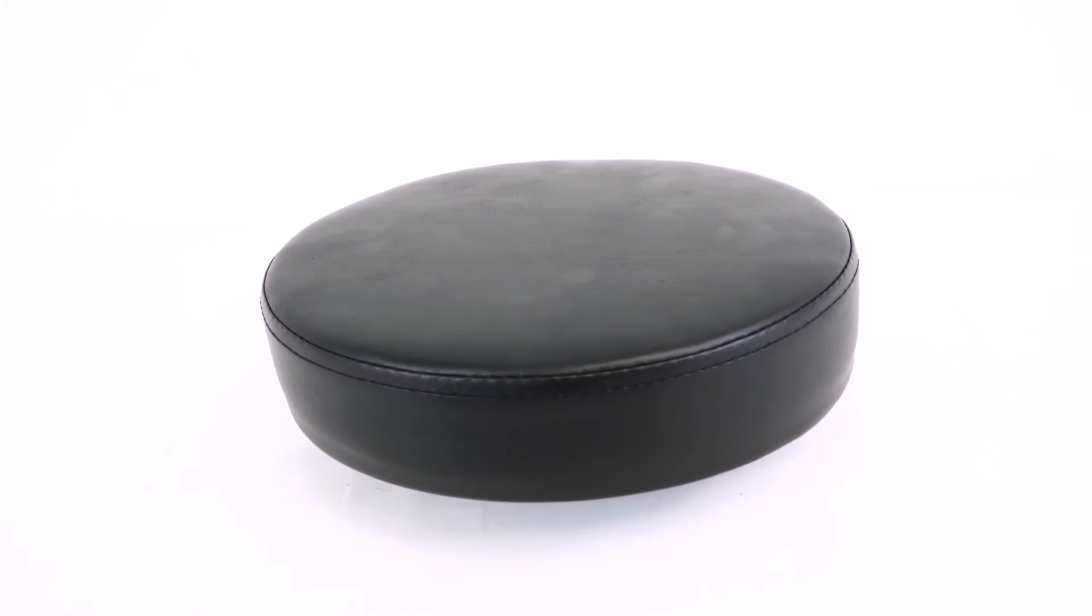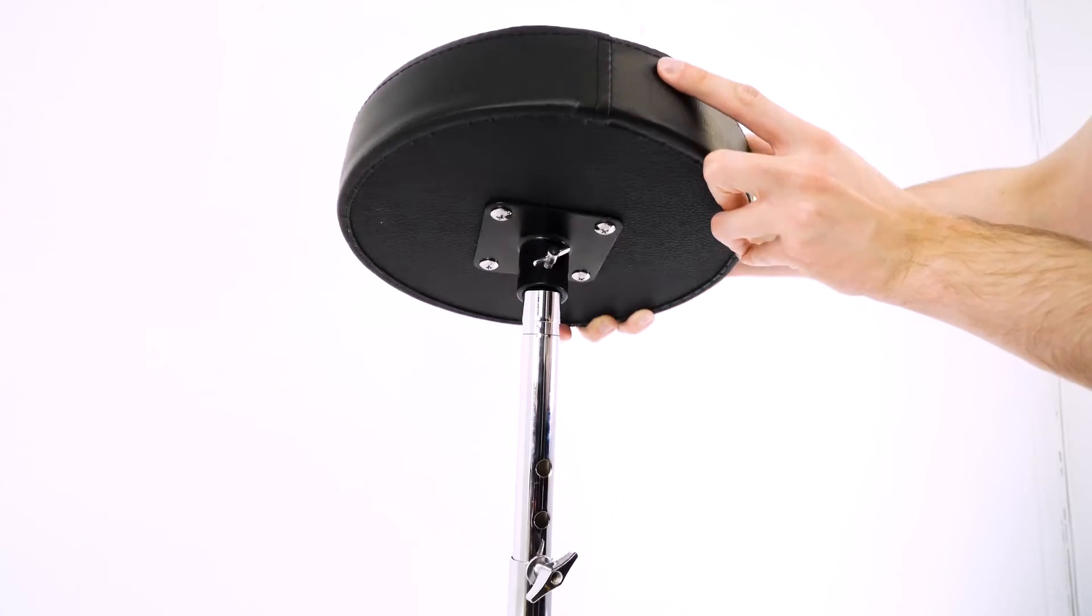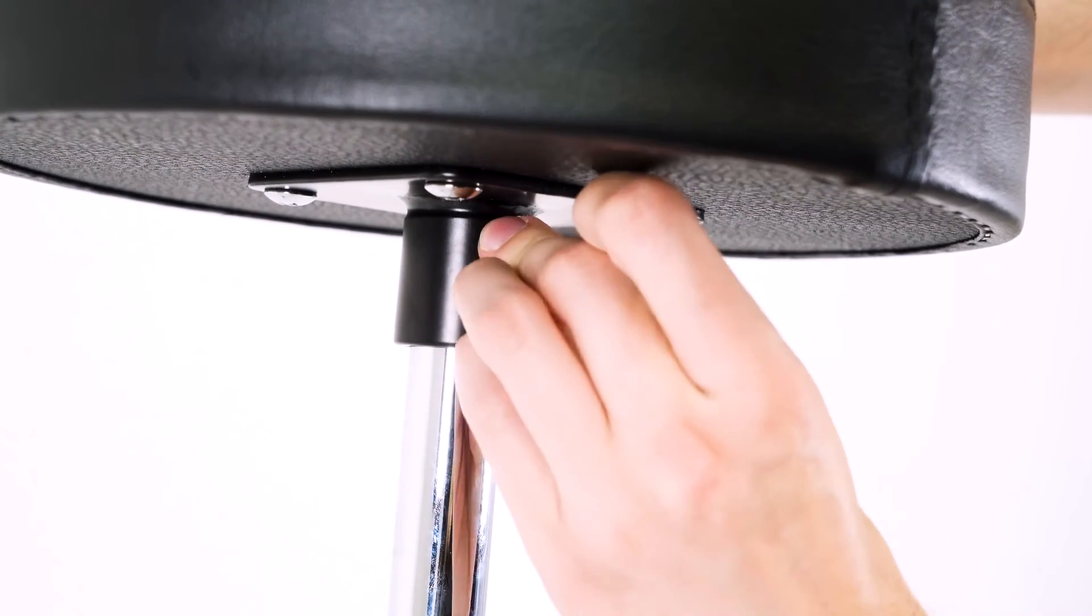Finally we can put the seat on by loosening this knob under the seat so it fits onto the top of the pole, and then we can tighten it up to lock it into place.